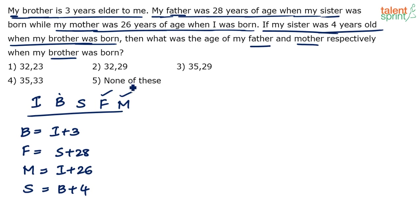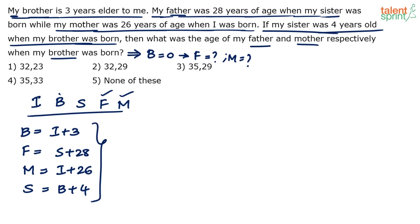When b equals 0, what is father's age and mother's age — f equals what and m equals what? Instead of solving all five-variable equations directly, let's build a timeline of when the three kids were born. Once we do that it will be very easy — just go by the age differences.